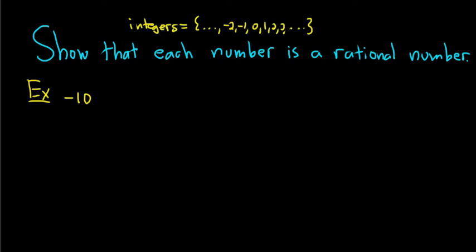We have to write negative 10 as an integer over an integer. So one way to do that would be to write it as negative 10 divided by 1. And so that takes care of it. We have shown that negative 10 is a rational number because it's an integer over an integer. Negative 10 is an integer and so is 1.